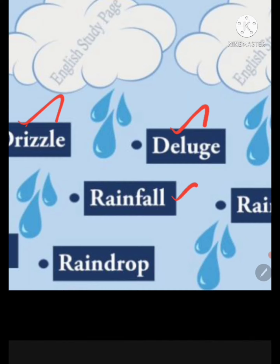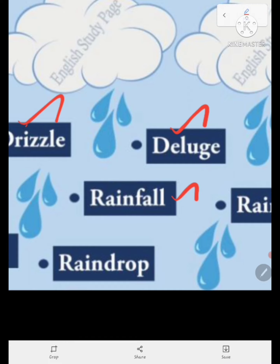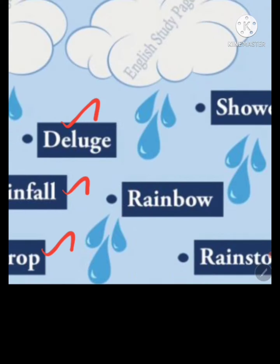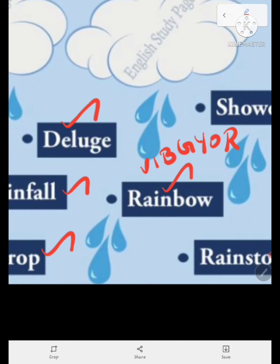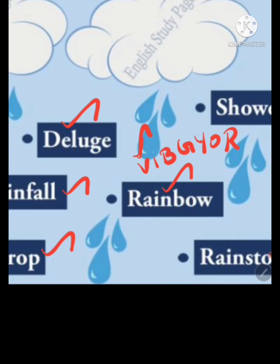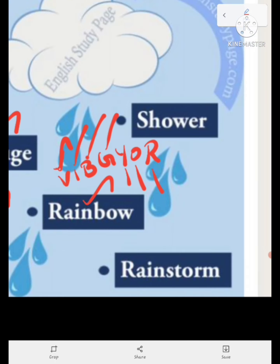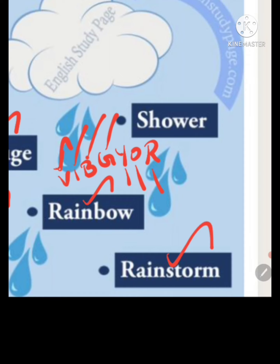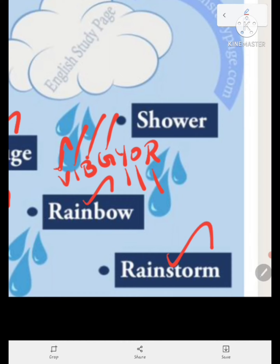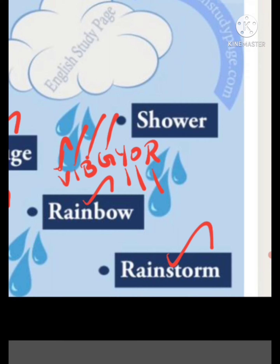Rainfall — rain is falling. Raindrops — 'marai tuli.' Rainbow — VIBGYOR: V for Violet, I for Indigo, B for Blue, G for Green, Y for Yellow, O for Orange, R for Red. Rainbow means 'vanaville.' Rainstorm is a storm with heavy rain — 'marai puyal' or 'abde puyal.'